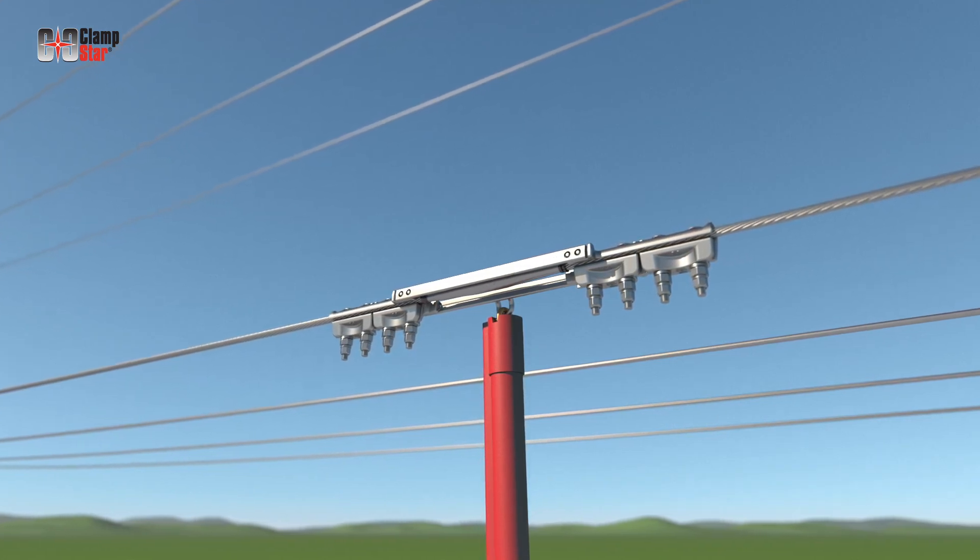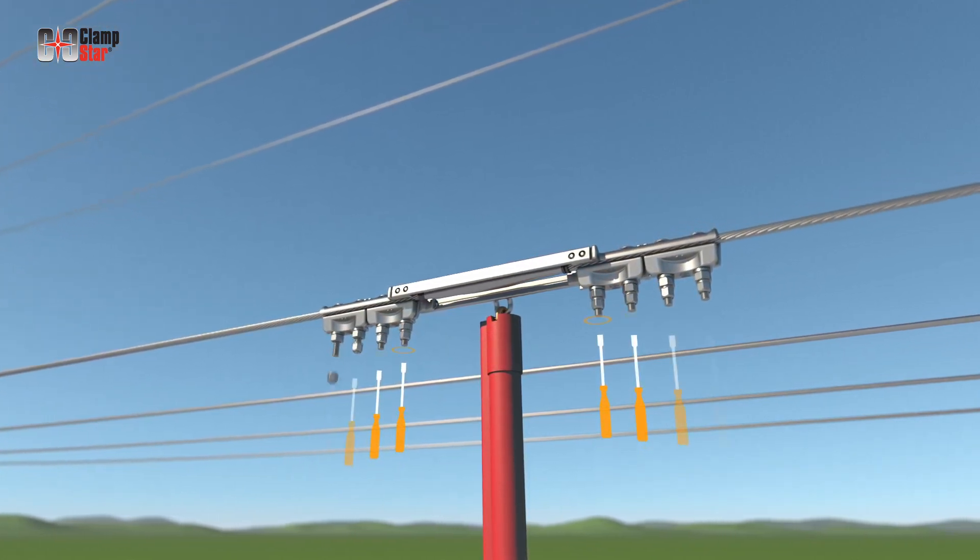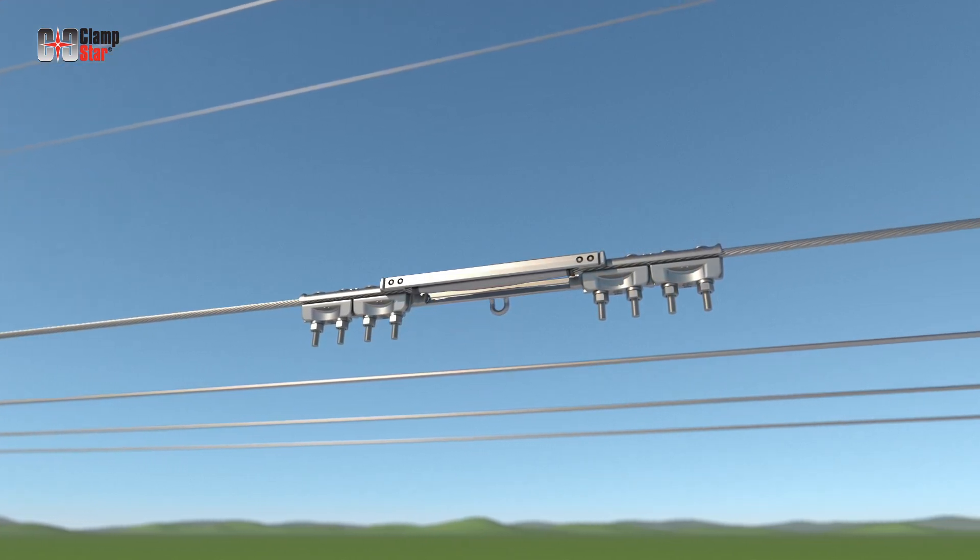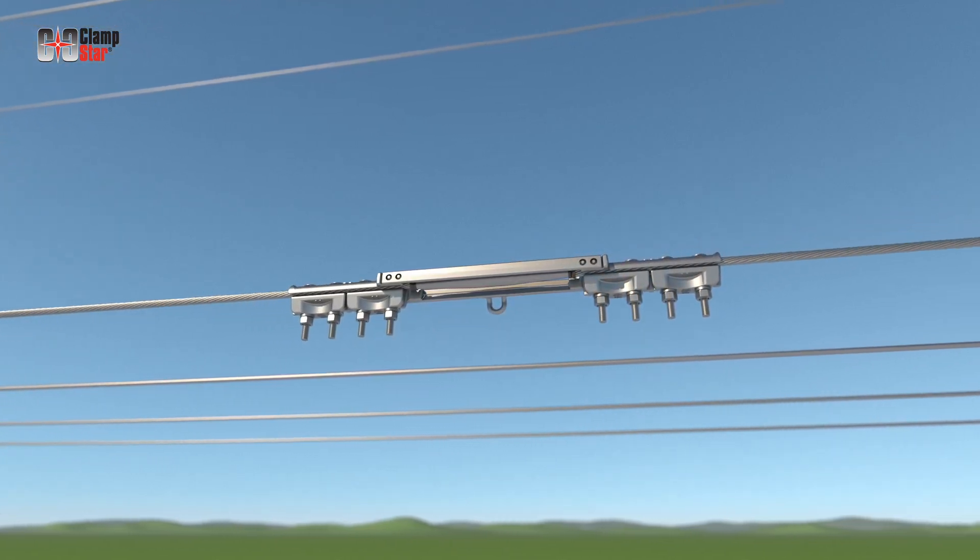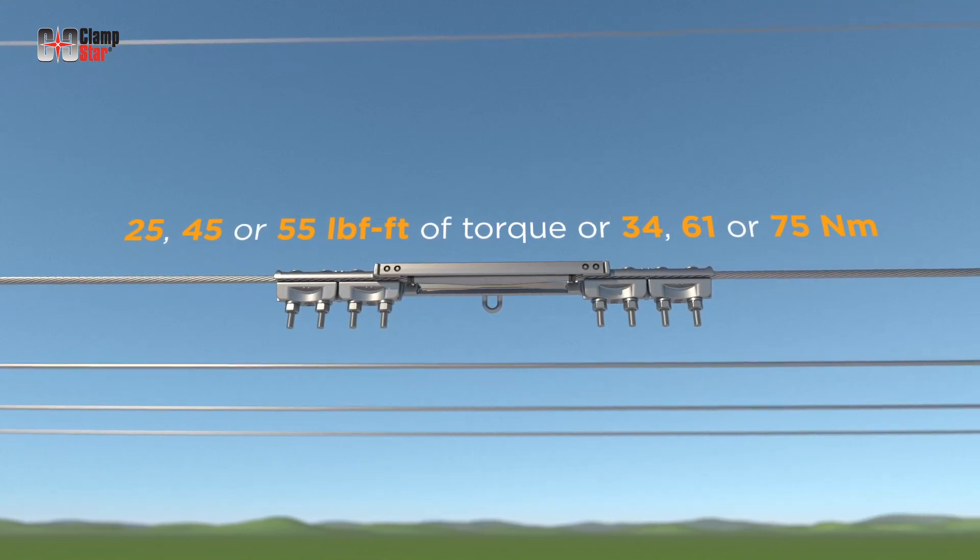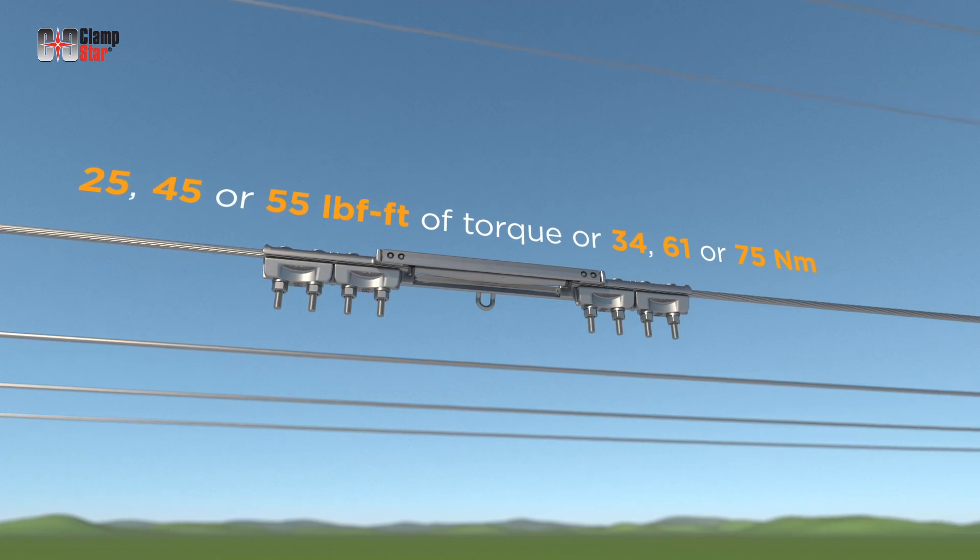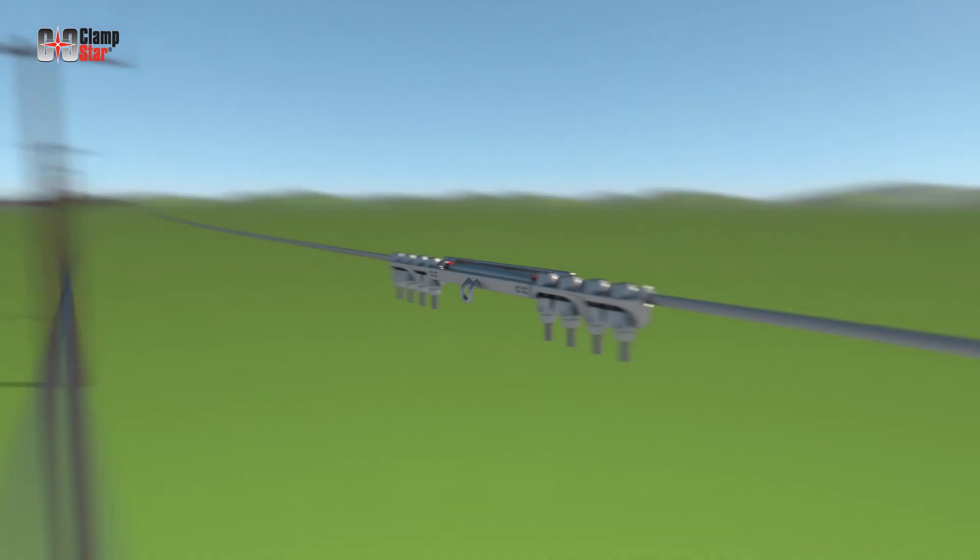The second application of torque continues until the head snaps off. Depending on which distribution class ClampStar unit is being installed, this will occur at either 25, 45, or 55 foot-pounds of torque, or 34, 61, or 75 newton meters.